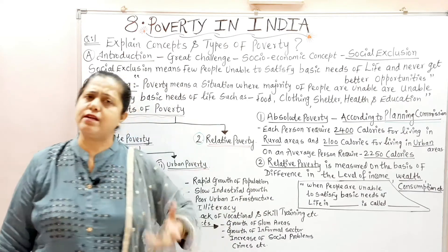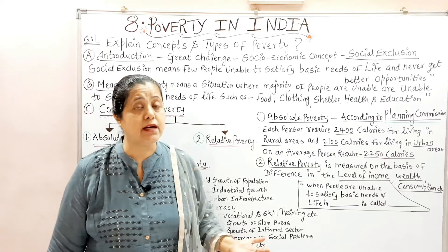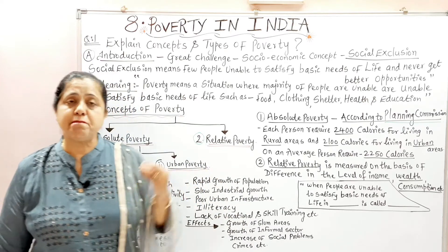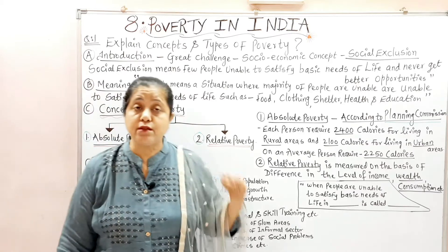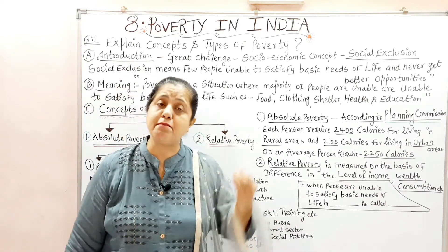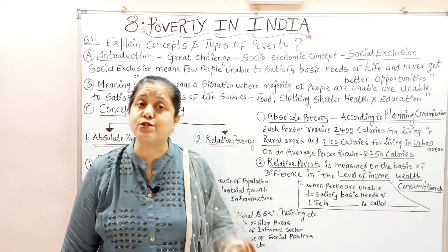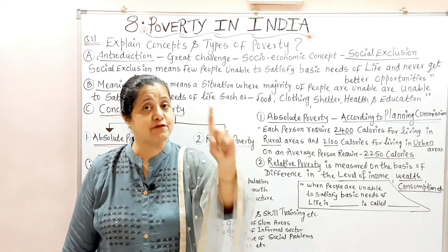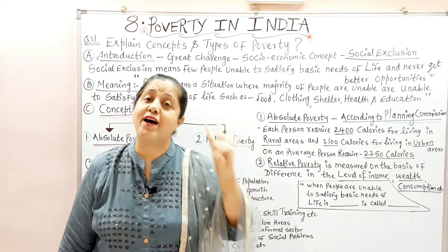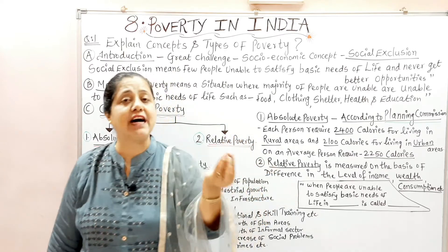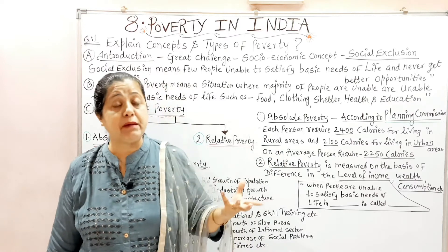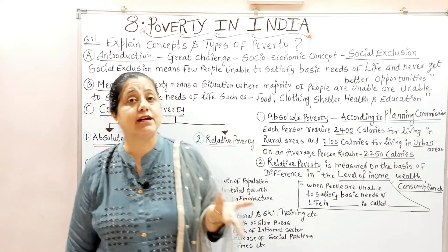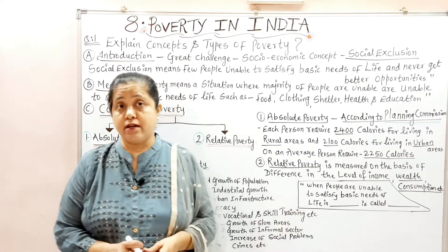Generally, when we talk about poverty, it means when people are unable to satisfy basic needs of life. When a person cannot earn enough income to satisfy the five basic needs — food, clothing, shelter, health, and education — they are considered a poor person.